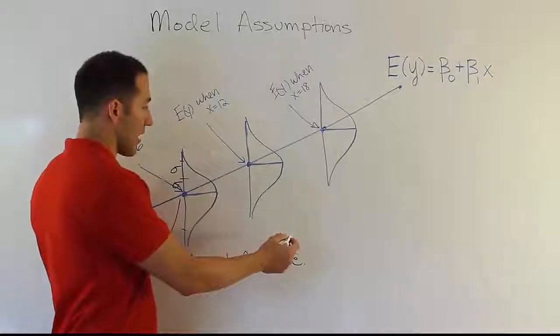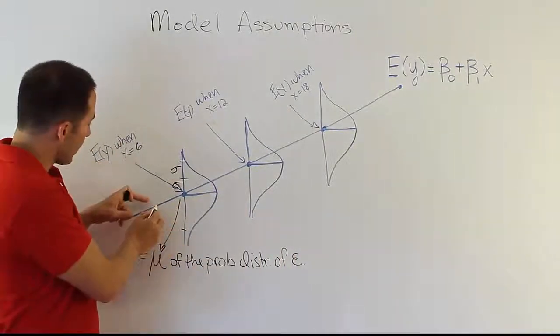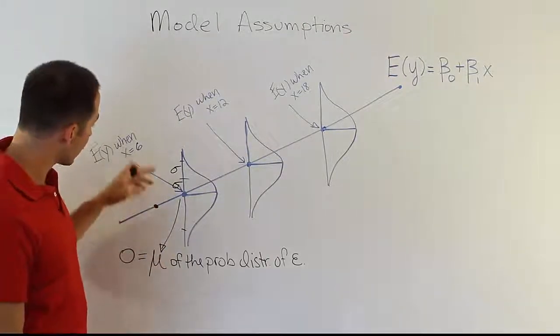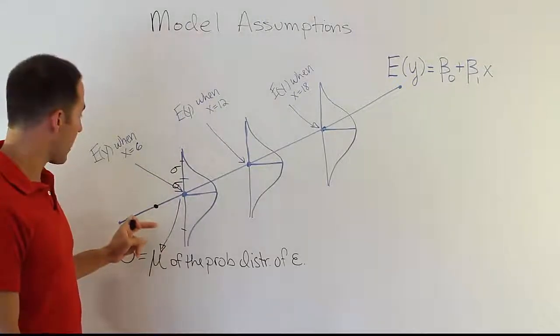So no matter where you make a prediction. So let's say you say, I want to know what happens when x is 4. Well, when x is 4, that'd be back here. You have your expected value there. And then, of course, you have another one of these bell curves. So the observed values would sometimes be above, sometimes be below that point.